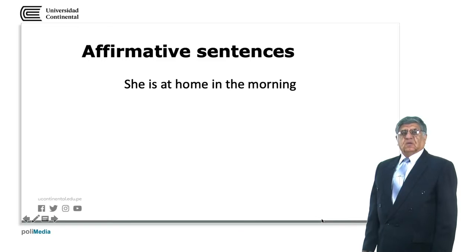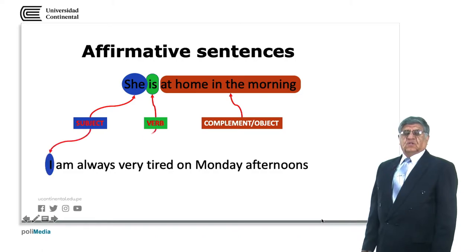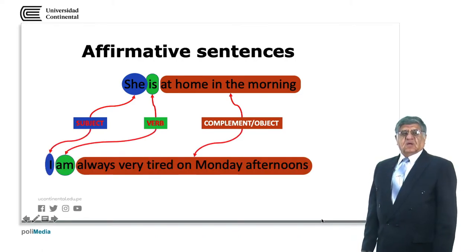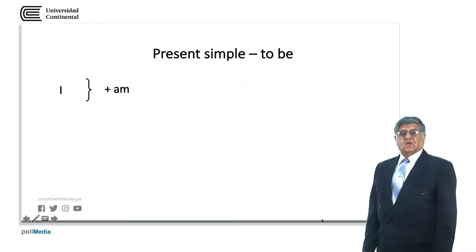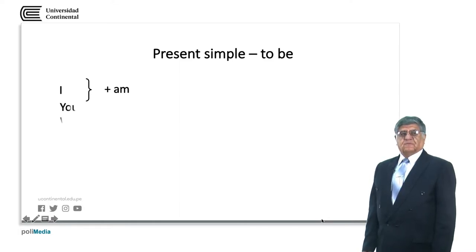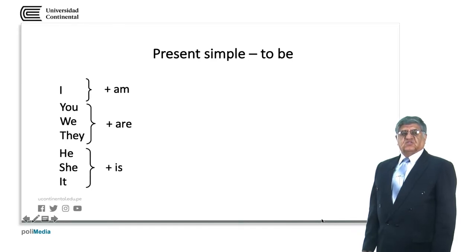Let's see some examples. 'She is at home in the morning.' We have the subject 'she', the verb 'is', and 'at home in the morning' as the complement or object. In the second example, we have 'I' as the subject, 'am' as the verb, and 'always very tired on Monday afternoons' as the complement. The present simple is constructed using the subject: 'I' uses 'am' for the first person singular. The 'are' form goes with 'you', 'we', and 'they' — 'you' is singular and plural at the same time. And the third form 'is' goes with 'he', 'she', or 'it'.